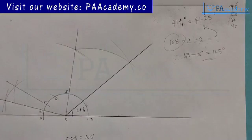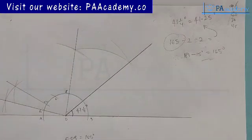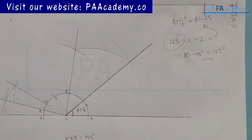So that is it on how to construct angle 41, 1 over 4 degrees. If you find value in this video, please give it a thumbs up. If you also want to know how to construct other angles, can you check the playlist on technical drawing? You'll find a lot of them there. So with that, I'll see you all in another video. Thank you.